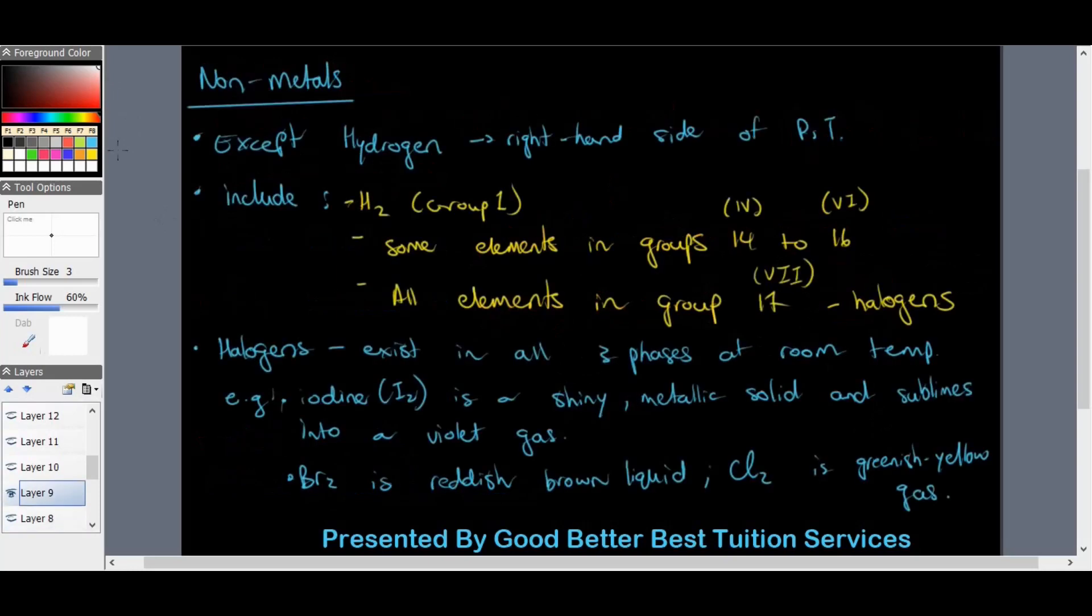We'll start with the non-metals. Non-metals, except hydrogen, are all on the right hand side of the periodic table. Hydrogen is the only non-metal that is present on the left and it's also the first element in the periodic table. Non-metals include H2 which is in group one, some elements in groups 14 to 16, as well as all elements in group 17. Group 17 elements are known as halogens.